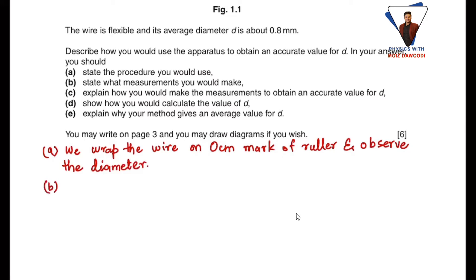The second question is state what measurements you would make. As we know that the wire is very thin, so a single wrapping of the wire will cause an error. To avoid error, what we do is wrap the wire multiple times around the ruler. Specifically, if I tell you how many times—10 times you need to wrap the wire around the ruler to avoid error as much as you can.